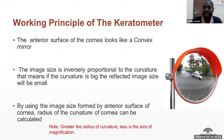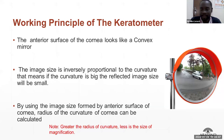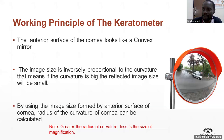The working principle of the keratometer: it works as a convex mirror, where the size of the image formed on the convex mirror is inversely proportional to the image size itself. This means the bigger the curvature, the smaller the image. By using that image, the surface curvature of the cornea is calculated by the keratometer.